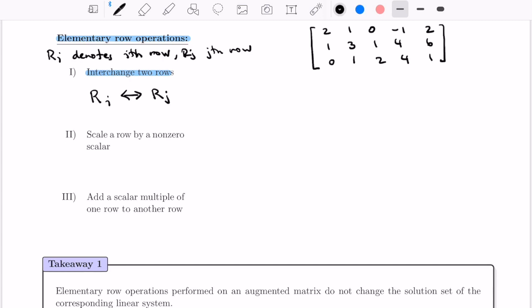Let's look at the row operation: row 1 interchange with row 2. Whenever I do a row operation like this, I'm going to use a tilde to remind myself and tell your teacher that you've done an elementary row operation. In this case, I take the matrix I started with and perform the row operation. I need to swap the first row and the second row. I'm left with 1, 3, 1, 4, 6; 2, 1, 0, minus 1, 2; and the third row stays the same: 0, 1, 2, 4, 1.